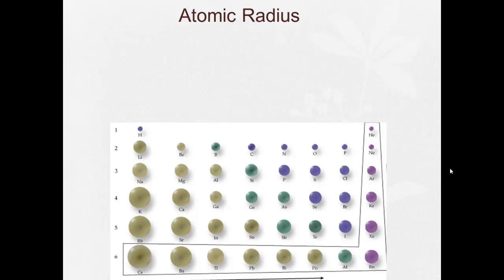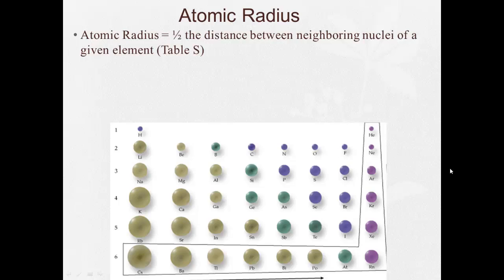The first thing we're going to talk about is atomic radius. The fancy name for atomic radius is half the distance between neighboring nuclei of a given element. So if you're going to get a bond between two of the same element, here's the nucleus and here's the nucleus.